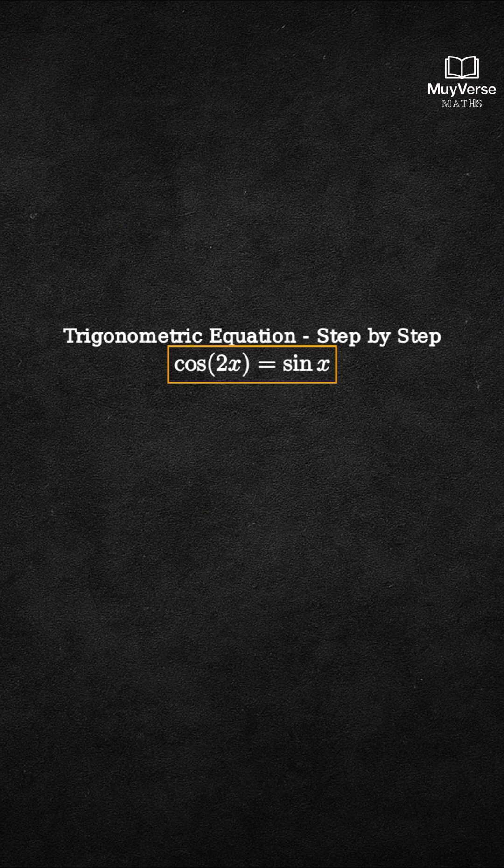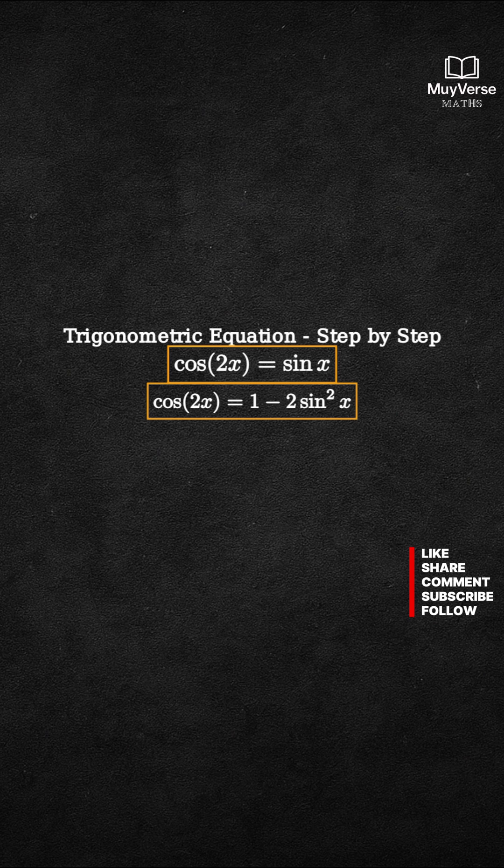Step 1: Rewrite cosine of 2x using a double angle identity. Cosine of 2x equals 1 minus 2 sine squared x. Now substitute this into the equation.